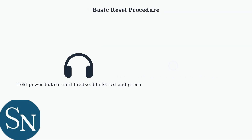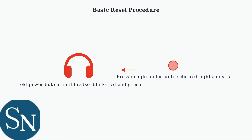If basic checks don't resolve the issue, try this reset procedure. Hold the power button on your headset until it starts blinking red and green, indicating pairing mode. Then press the button on the USB dongle until it shows a solid red light. This re-establishes the connection between devices.